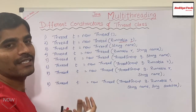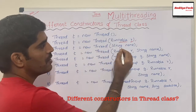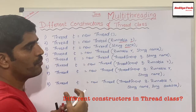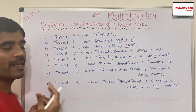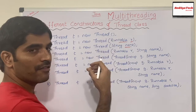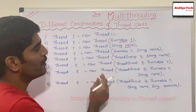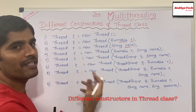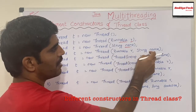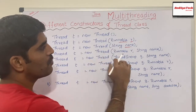Another constructor is Thread t = new Thread(String name), where 'name' is the name of the thread. So when you create a thread, you have the option to set its name at creation time. For example, Thread t = new Thread("RedSysStack") — calling getName() on it will return 'RedSysStack'. The fourth way combines both: Thread t = new Thread(Runnable r, String name), where you pass the runnable object and also set the thread's name.